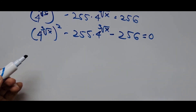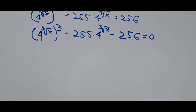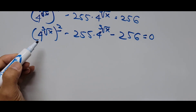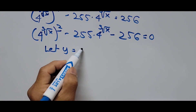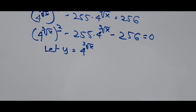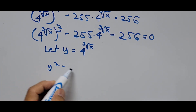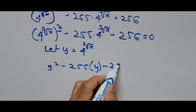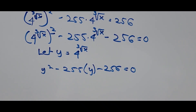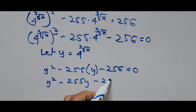Now the whole equation is transformed to a quadratic equation since the first term has exponent 2. That means it's a quadratic equation. Now we have to substitute another variable for the value of the first term, that is 4 raised to the cube root of x, and let y equal 4 raised to the cube root of x. So substituting that value, it becomes y squared minus 255 times y minus 256 equals 0.